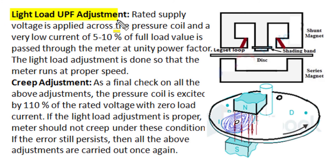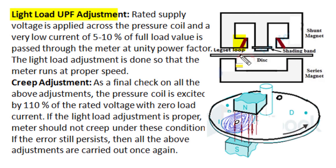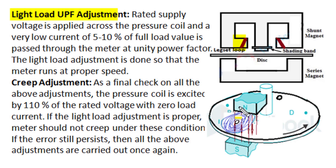After unity power factor adjustment by brake magnet and 0.5 lagging power factor adjustment by the shading band, light load unity power factor adjustment is done once again. Rated voltage is given to the shunt magnet voltage coil, and a light load of 5 to 10 percent of full rated load is passed through the current coil at unity power factor. The lag set loops are adjusted again so that the meter runs with required speed and desirable accuracy. Finally, after all adjustments, the creep condition is checked by exciting the pressure coil at 110 percent of rated voltage with zero current in the current coil.